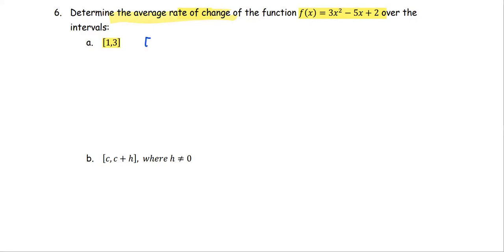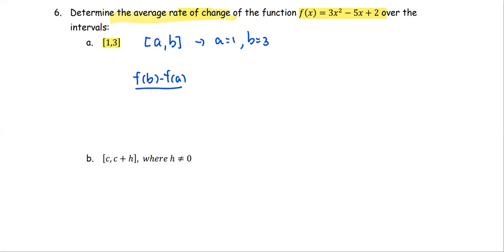If we write this as the closed interval [a, b], then a is 1 and b is 3. The average rate of change of the function is f(b) minus f(a) divided by b minus a, or the function at 3 minus the function at 1, divided by 3 minus 1.